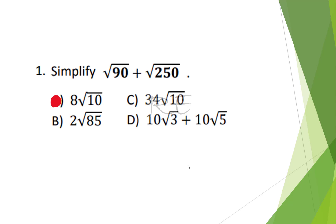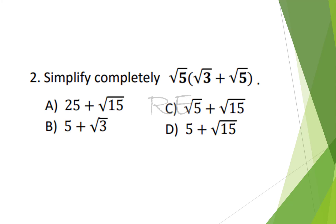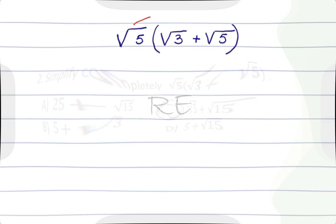So the correct answer is A. Simplify completely: square root of 5 times open parenthesis, square root of 3 plus square root of 5, close parenthesis.